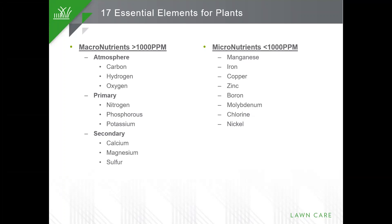There are 17 essential elements for plants. We have the macronutrients, and we get three of them — carbon, hydrogen, and oxygen — from the atmosphere. Plants are able to take carbon dioxide or water vapor from the atmosphere and utilize them in their metabolic processes. We then have the primary nutrients, which are what you see on your traditional bag of fertilizer: nitrogen, phosphorus, and potassium — NPK. Those are the numbers you see on the bag.